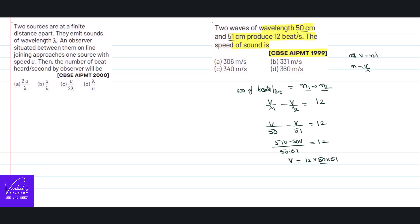50 and 51 are in centimeters, so to convert them into meters I have to do 10 to the minus 4. So when you multiply that you will get an answer of 306 meter per second. So answer for that first problem is 306, it's a simple problem.